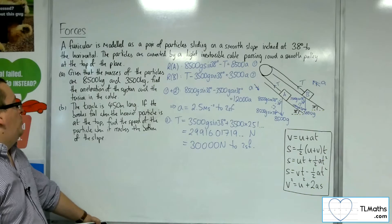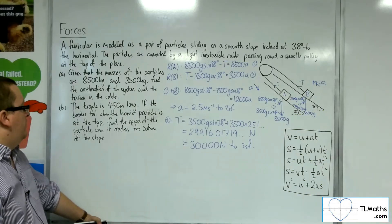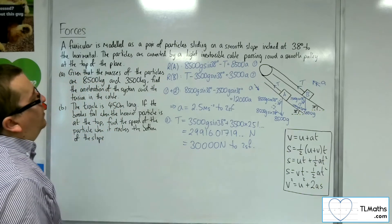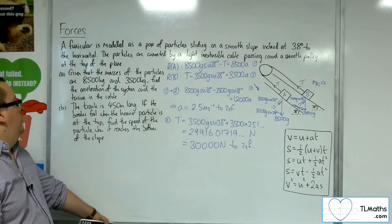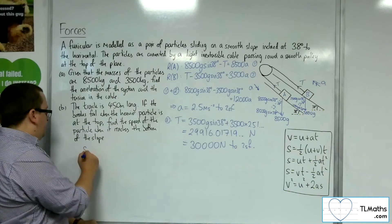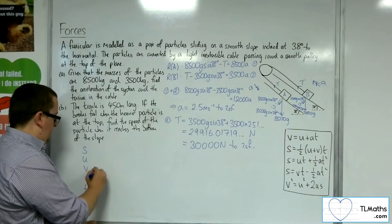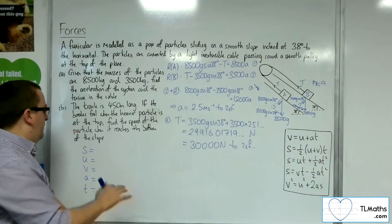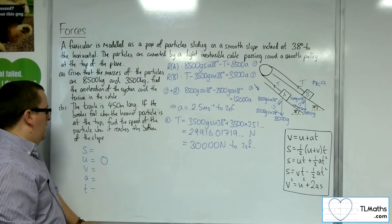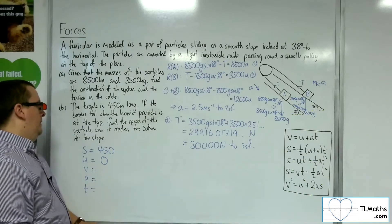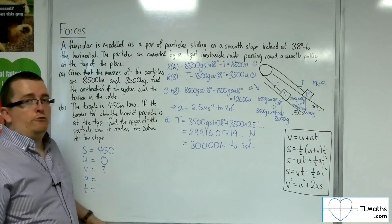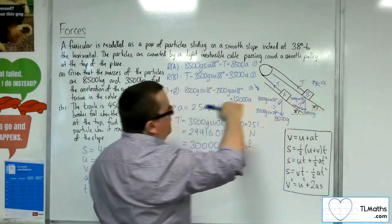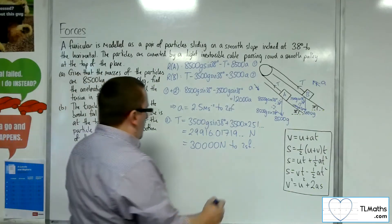For part B, the track is 450 metres long. If the brakes fail when the heavier particle is at the top, find the speed when it reaches the bottom of the slope. This is a SUVAT problem. The particle is initially at rest when the brakes fail, so u = 0, and it needs to travel 450 metres. The problem is we don't know the new acceleration — if the tension is gone from particle A, we need to recalculate.